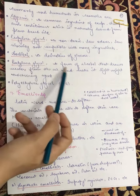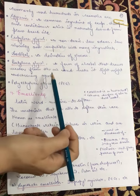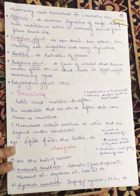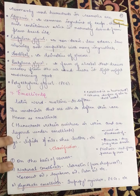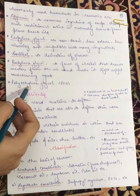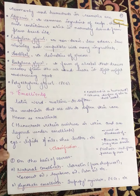Next, we have butylene glycol. It is a form of alcohol that draws water from the air and makes it a lightweight moisturizing agent. Next is polyethylene glycol. These are certain humectants that are used in cosmeceuticals for the manufacturing of products.